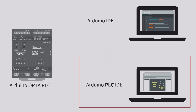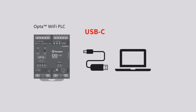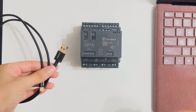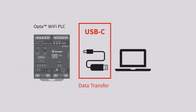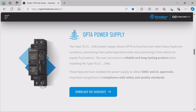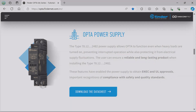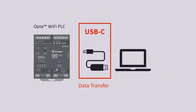For this video, I'll be working with Arduino PLC IDE. I'm using a USB-C cable to power the Opta PLC device. Make sure you use a USB cable that supports data transfer. Note that the USB does not power the output relays of the Opta PLC — for that you need an external power supply — but a USB-C cable is enough for this video.